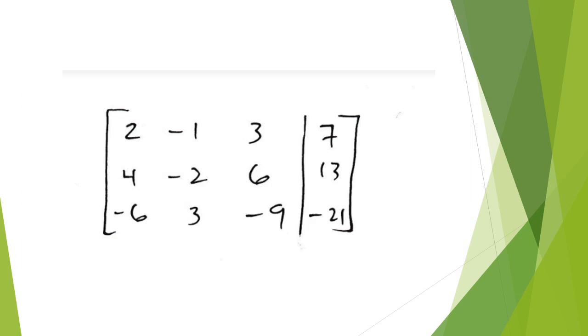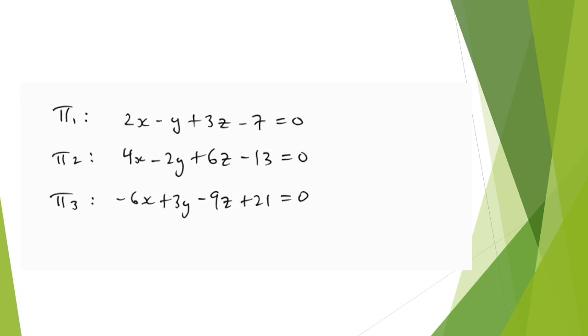And you can see here, we just put the coefficients of everything into the matrix. So like for the first row, it's going to be 2x minus y plus 3z equals 7, as the equation of plane 1 says.